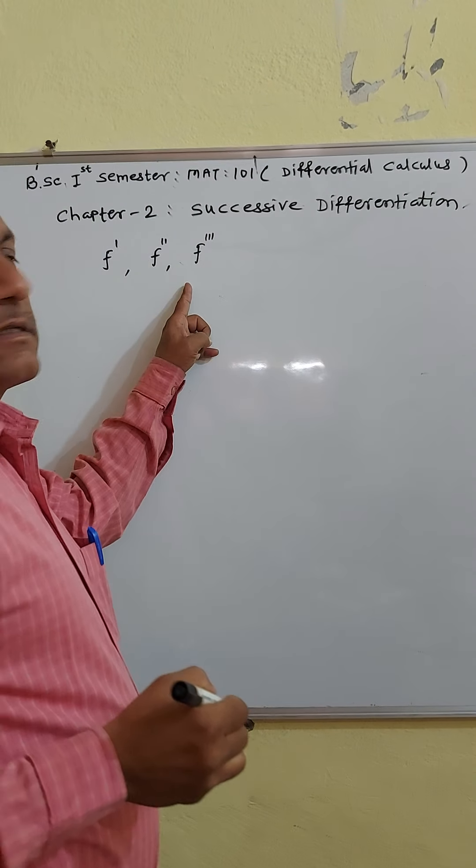Therefore we obtain d2y by dx squared plus tan x times dy by dx plus y into cos squared x is equal to 0. In this way we prove the given differential equation equals 0 when y is equal to sin of sin x.